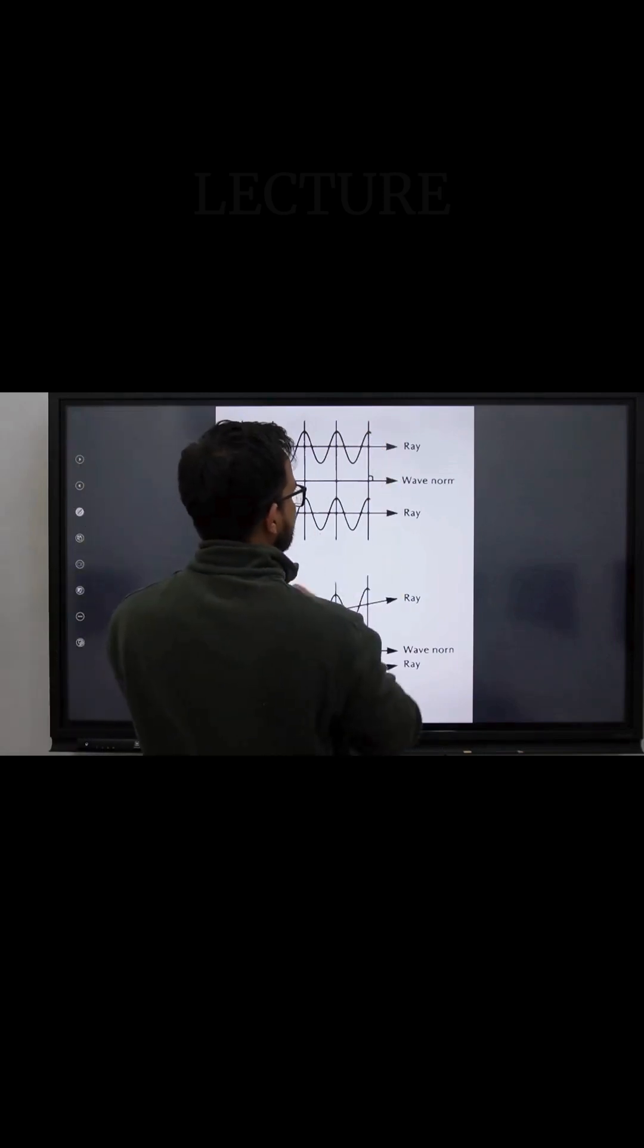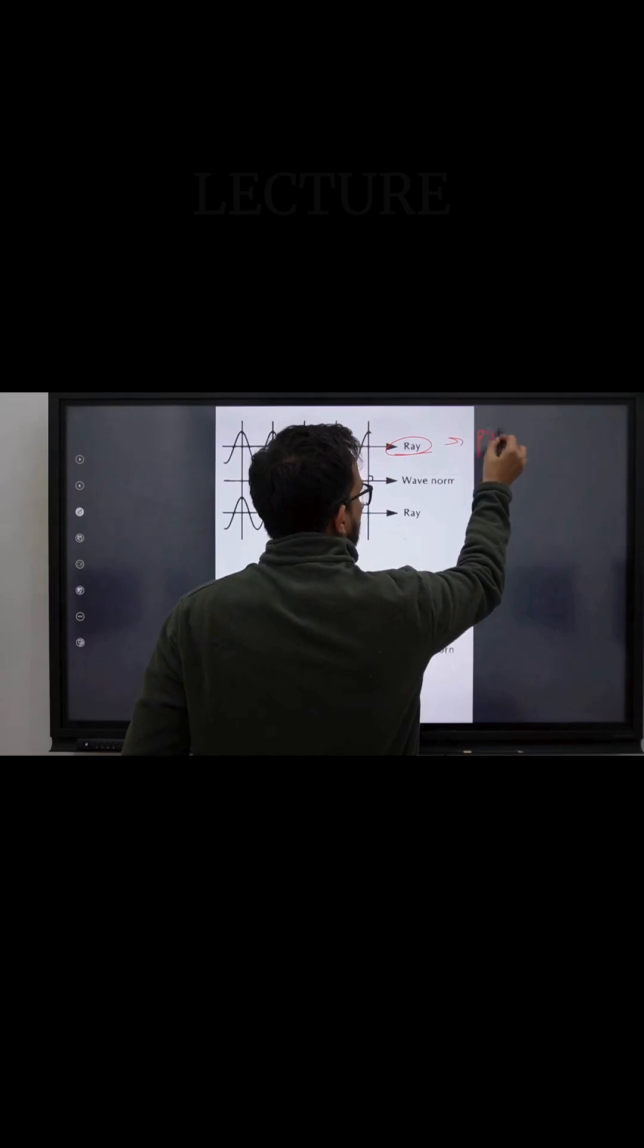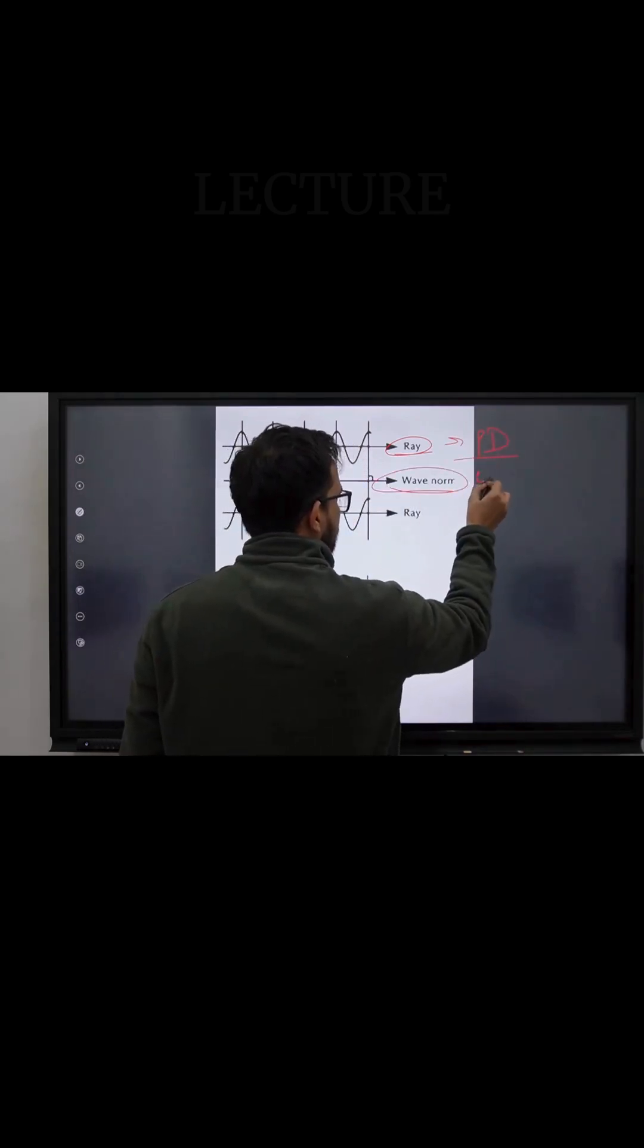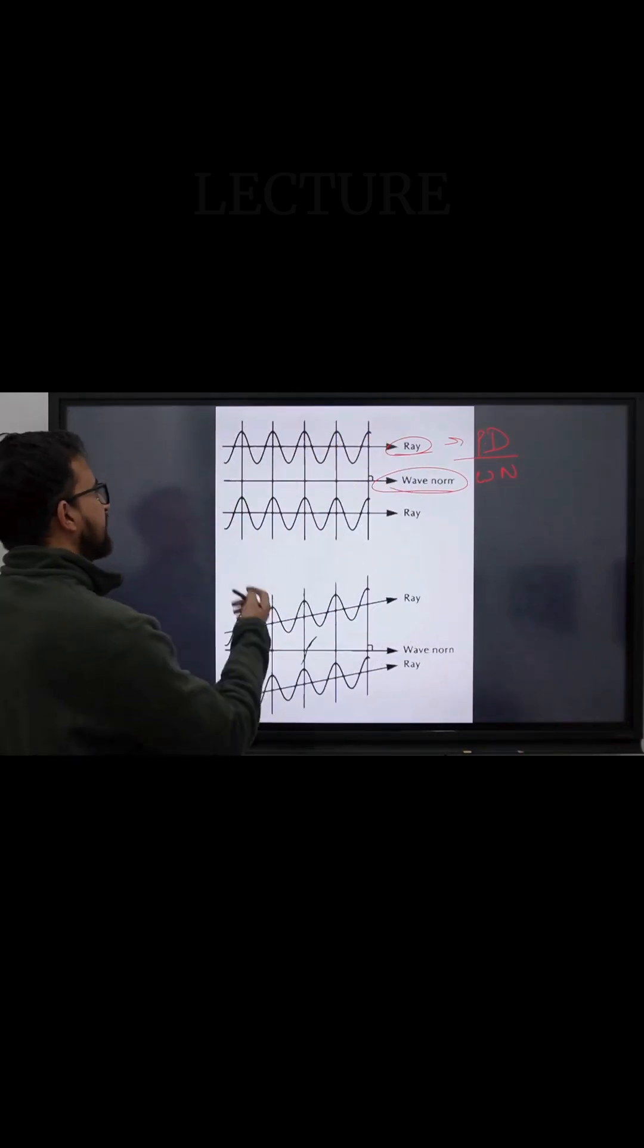In the first direction, I can see my ray is going in this direction. That means this is my propagation direction. This is my wave normal, and both of them are parallel to each other.